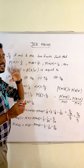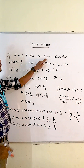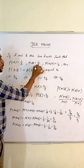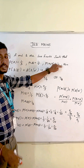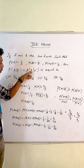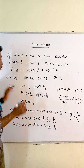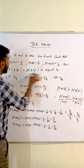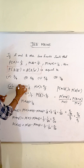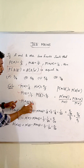This problem involves conditional probability. If A and B are two events such that P(A) = 1/3, P(B) = 1/5, P(A union B) = 1/2, find P(A given B-bar) plus P(B given A-bar). Given values: P(A) = 1/3, P(B) = 1/2, P(A union B) = 1/2.